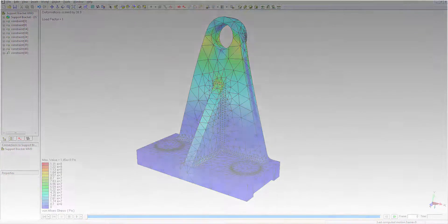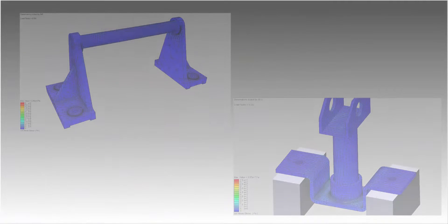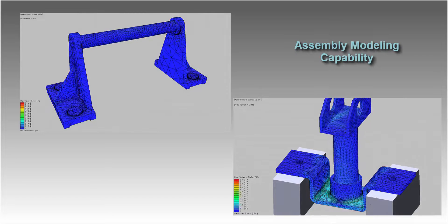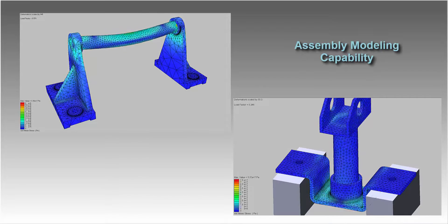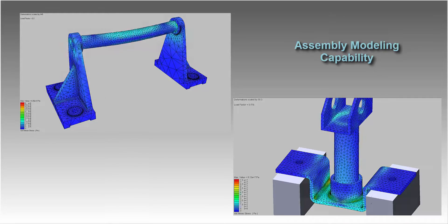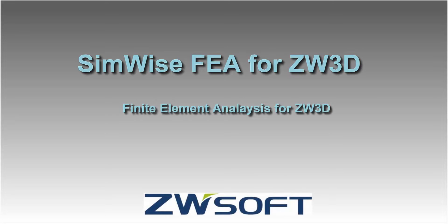Before we conclude this demonstration, it is important to note that SimWise FEA for ZW3D also models assemblies, allowing parts to interact with one another. This means that things such as weldments and bolted assemblies can be modeled when it is not possible to analyze a part just by itself. This concludes the basic demonstration of SimWise FEA for ZW3D by ZWsoft.